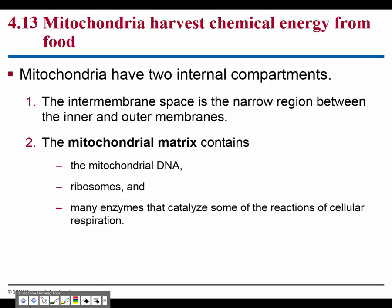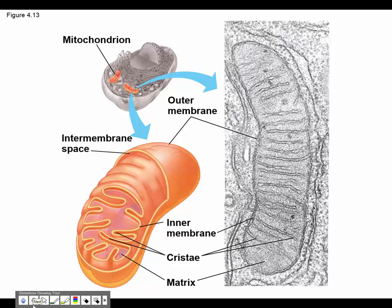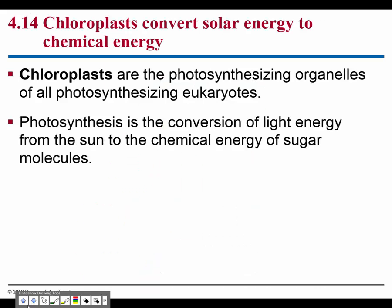There are two compartments: the intermembrane space, which is the narrow region between the inner and outer membrane, and the mitochondrial matrix. The matrix has mitochondrial DNA, so your mitochondria in each cell has its own DNA for replication. It also has ribosomes and lots of enzymes that catalyze reactions for cellular respiration. You should be able to recognize the mitochondria compartments in an animal cell for the test.